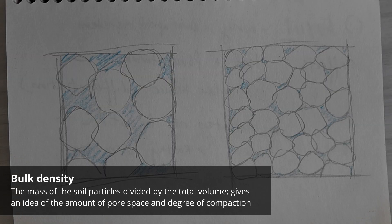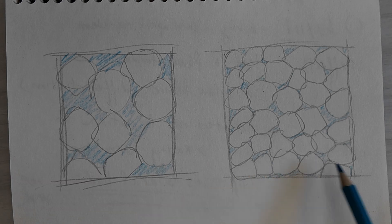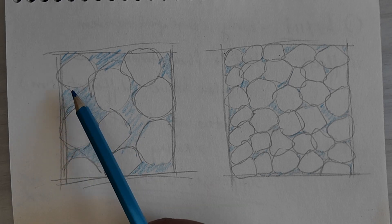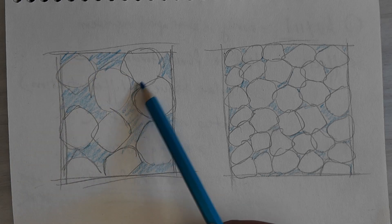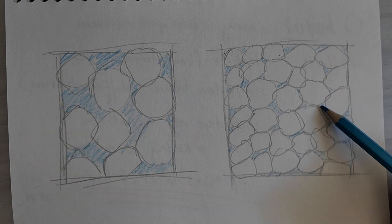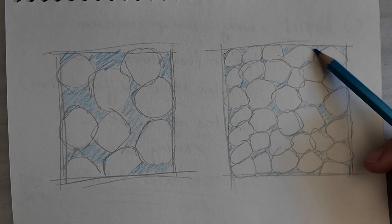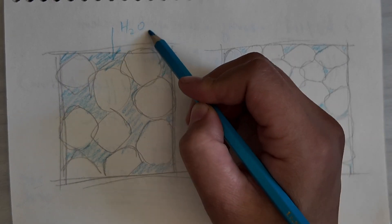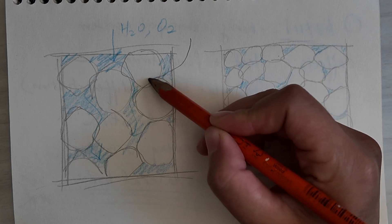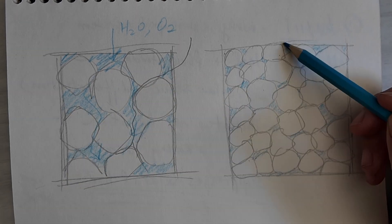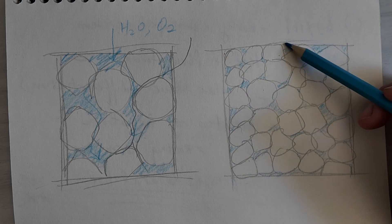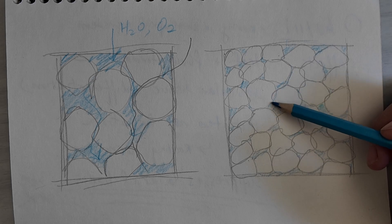Figuring out the bulk density is important because it's a measure of how much pore space there is. Suppose these are the same volume — they occupy the same amount of space — but the one on the left has larger aggregates with more space between the solid particles, whereas in the sample on the right they're all crammed together, so there's a lot less space. Because it's more compact and denser, there are a lot more solid particles within the same volume.